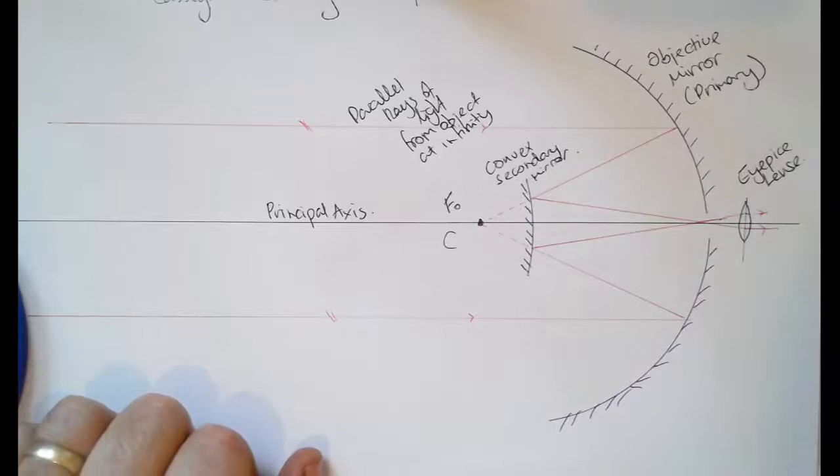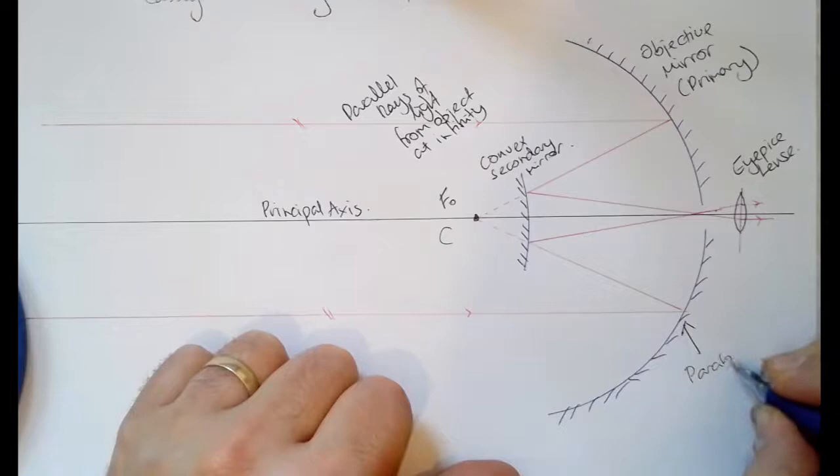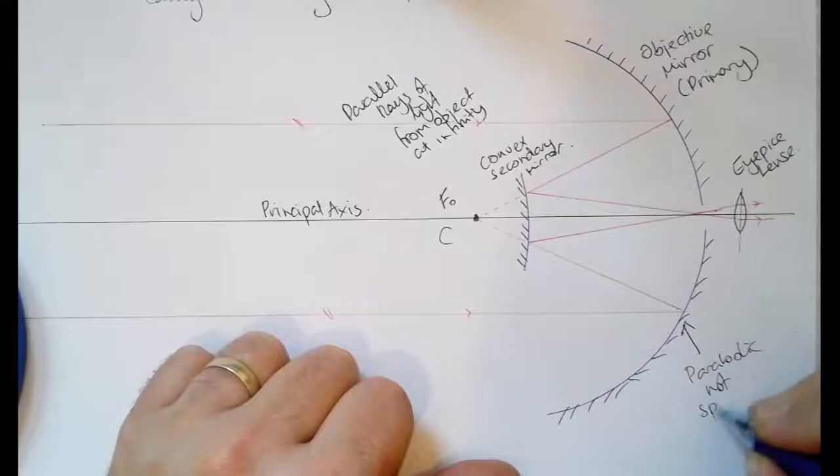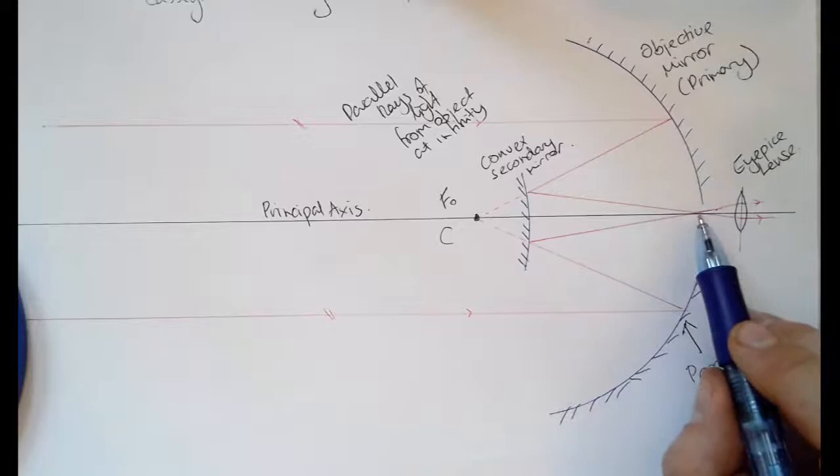Now it is worth noting, I'll come back to what I said earlier about the shape of this lens. This lens needs to be parabolic, not spherical, and we'll have a look at why in a second. This must be convex, as we've said before. These rays of light must cross after the secondary mirror and you need to have an eyepiece lens.